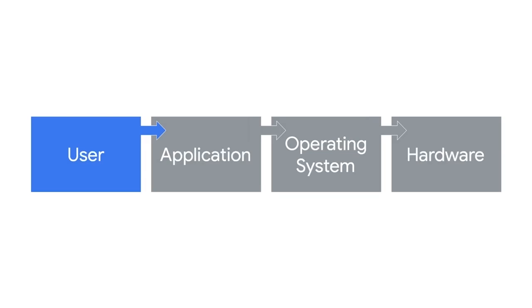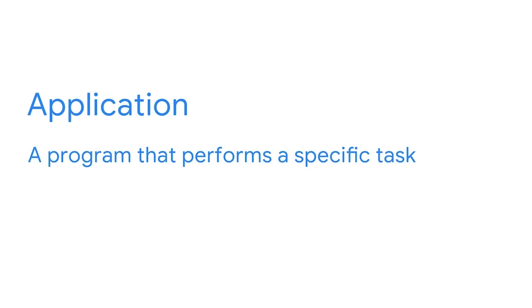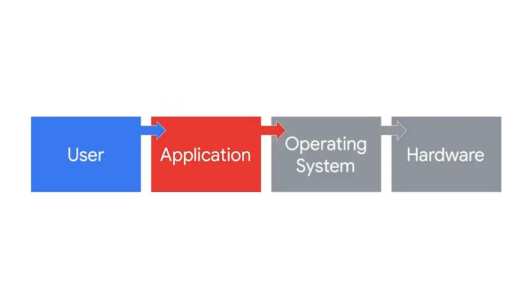Now let's look at how you and all users communicate with the system to complete a task. The process starts with you, the user. To complete tasks, you use applications on your computer. An application is a program that performs a specific task. The application sends your request to the operating system. From there, the operating system interprets this request and directs it to the appropriate component of the computer's hardware. The hardware will also send information back to the operating system, and this in turn is sent back to the application.